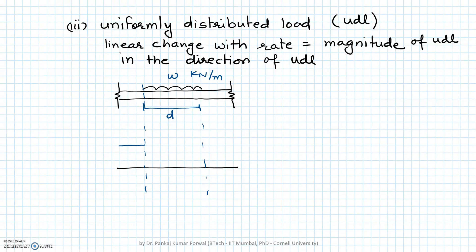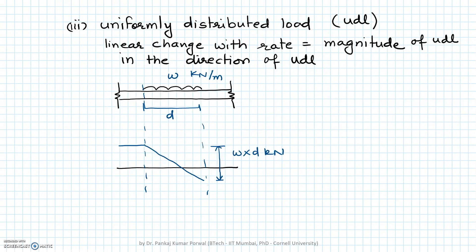From the first point of the UDL, the shear force diagram will start changing. Because this UDL is in the downward direction, the change will be in the downward direction — that is, the shear force will decrease. The rate of decrease will be W kN per meter, so over length D the total change in shear force will be W × D kN. Beyond that the shear force diagram will be constant. For a UDL, the total change in shear force equals the total magnitude of the UDL.